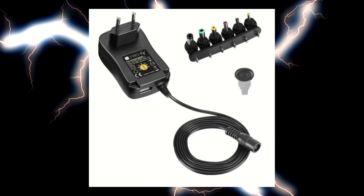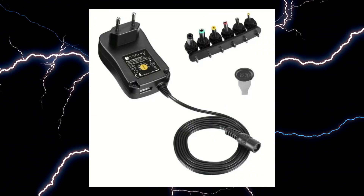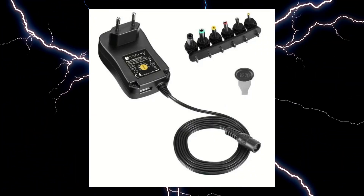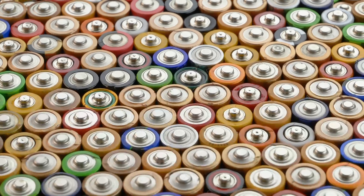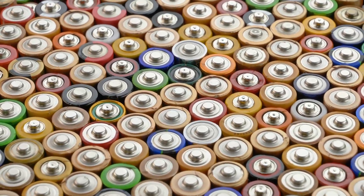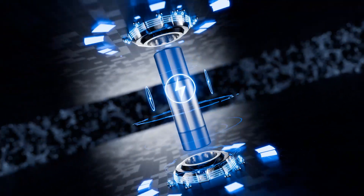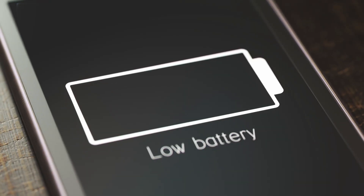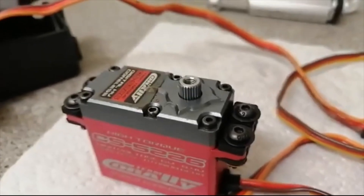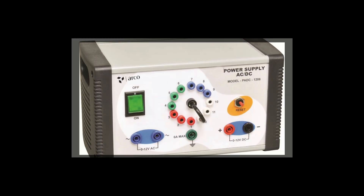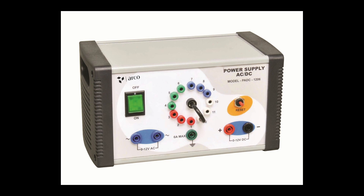Third, use a plug-in AC-DC power source. I highly recommend using a plug-in AC-DC power source instead of relying on batteries. Batteries are fine for basic testing, but they'll quickly lose charge and cause erratic behavior of your servo motors. A stable power source is crucial to ensure that your servo motors operate correctly and consistently during the build process and operation.